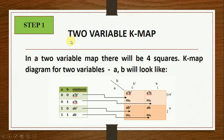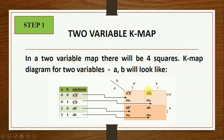In a 2-variable KMAP there will be 4 squares. The diagram for 2 variables A and B has 4 squares. The first variable is A and then we have B. For A, we first write 0 then 1 — 0 is referred to as A-bar and 1 as A. Similarly for variable B, first we write 0 then 1, so 0 refers to B-bar and 1 refers to B.